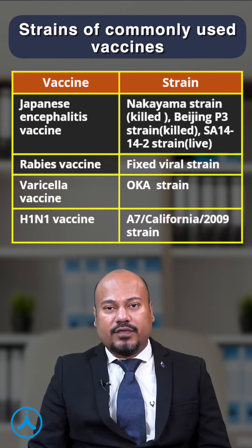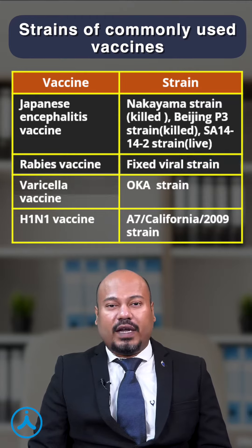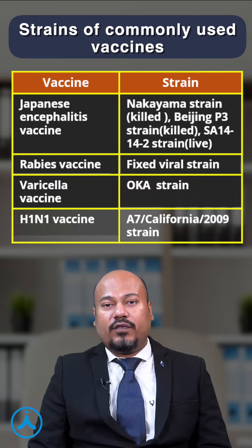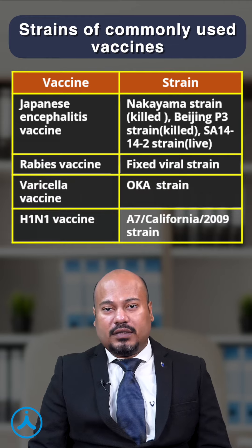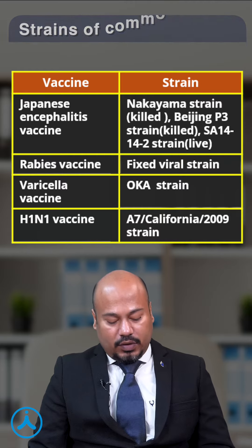The rabies vaccine uses the fixed virus strain. The varicella vaccine uses the OKA strain. The swine flu vaccine uses the A/H1N1 California 2009 strain.